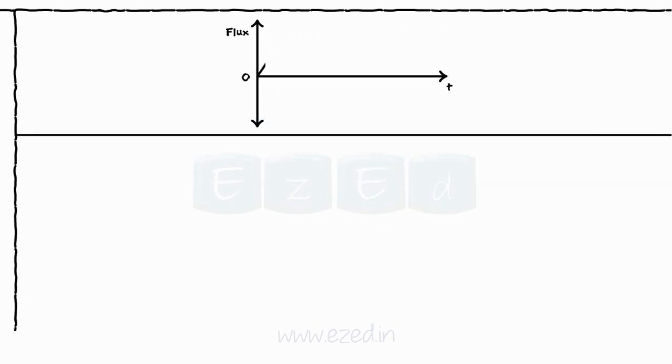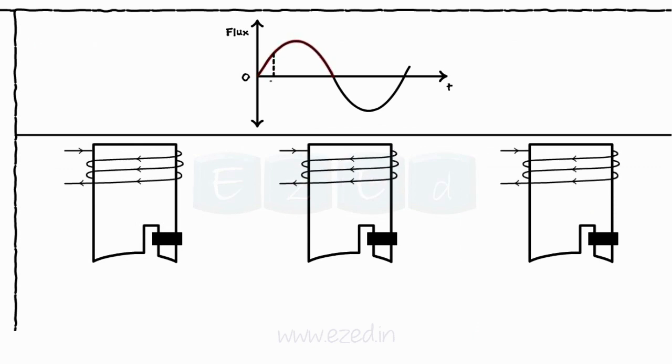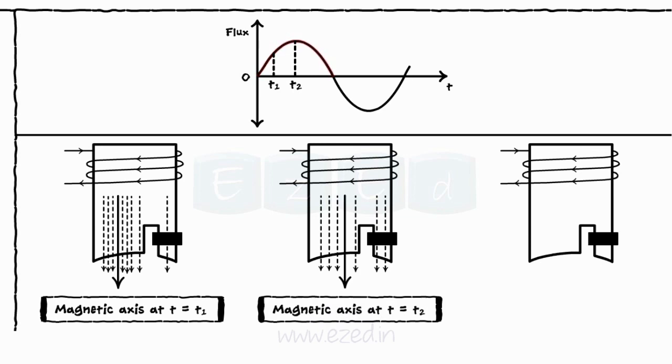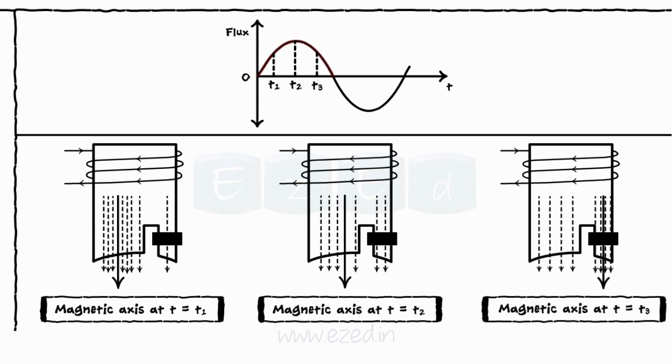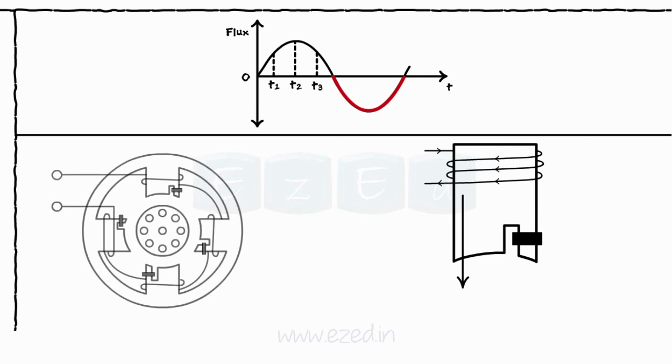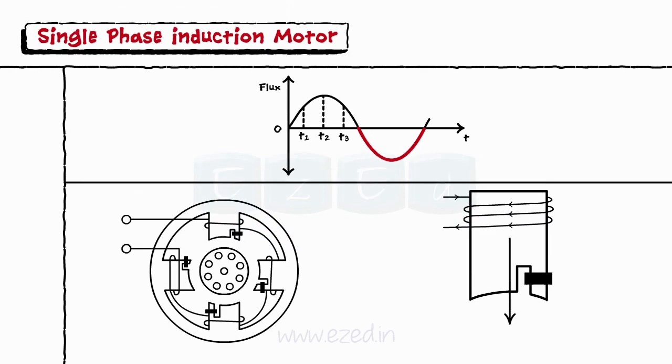As an AC signal is applied to the motor, the magnetic field gets generated. As the magnitude of the AC signal increases in the first half, the magnetic axis shifts from the non-shaded area to the shaded area and back to the non-shaded area. The same motion of axis happens during the negative half also. This motion of axis exhibits the nature of rotational magnetic field and motor starts to work immediately.